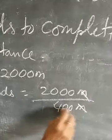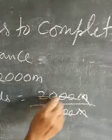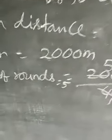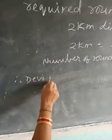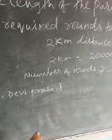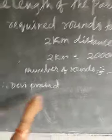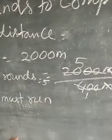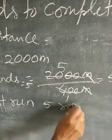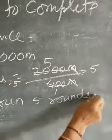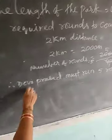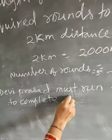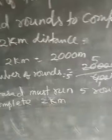Meters cancel with meters, zeros cancel, and 2000 divided by 400 gives 5. Number of rounds equals five rounds. Therefore, Devi Prasad must run five rounds to complete two kilometers. Do you understand this?